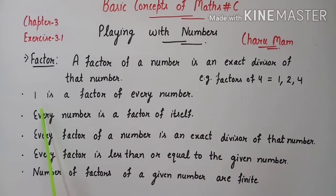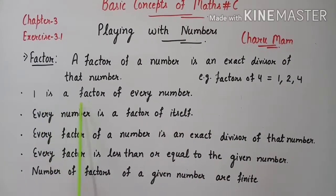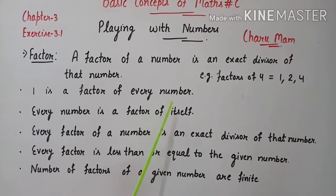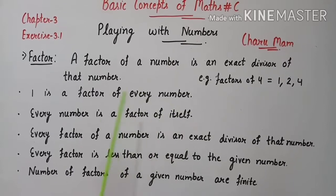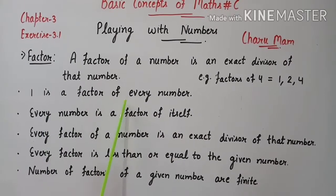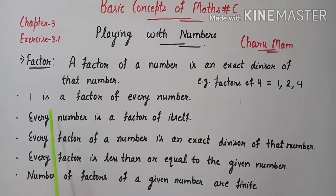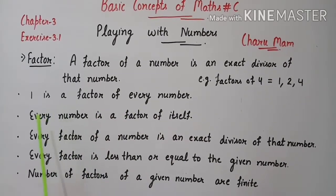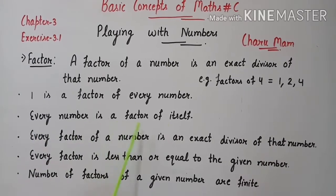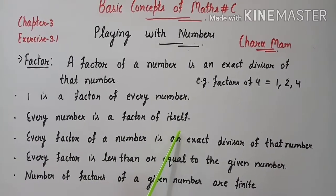Next point: 1 is a factor of every number, which means 1 will become a factor of every number. Next: every number is a factor of itself.